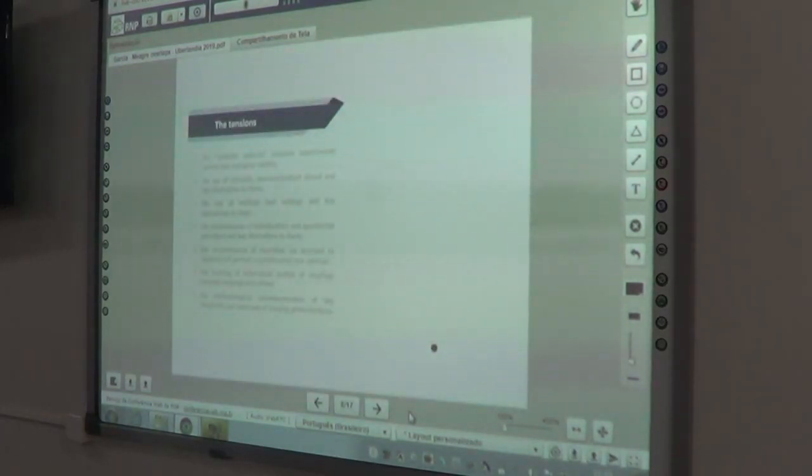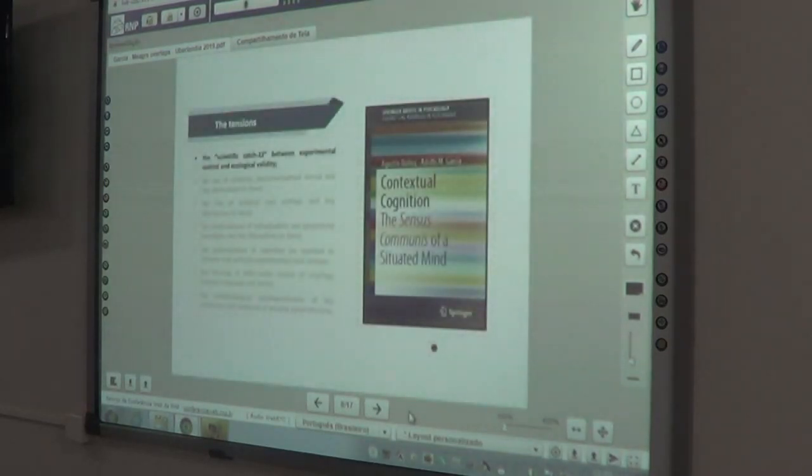There are a number of tensions, the first one of which is what I, in a book that we published a couple of years ago, we refer to as a scientific catch-22 between experimental control and ecological validity. So basically, something that we do at the lab is, when we are studying language or facial processing or computational processing, we carefully choose a set of words or faces.